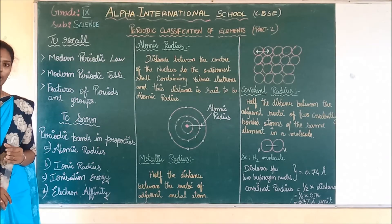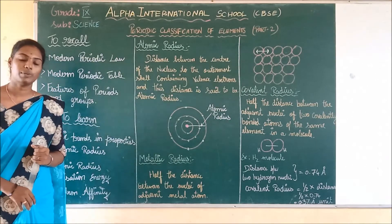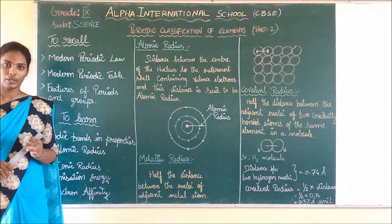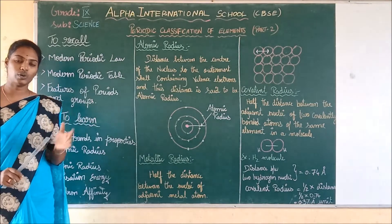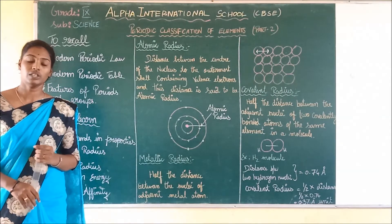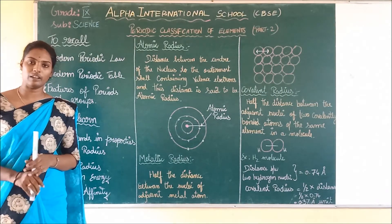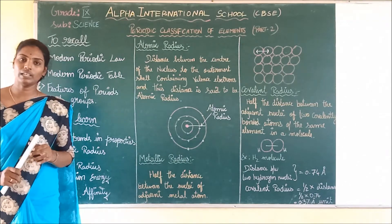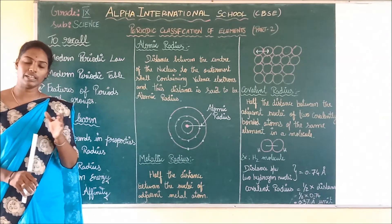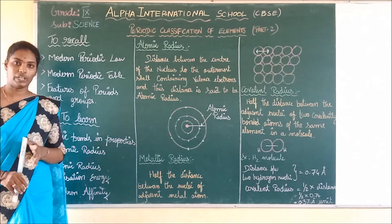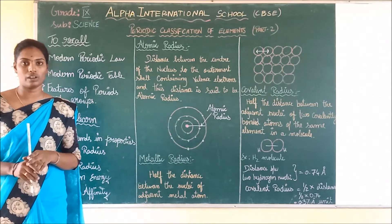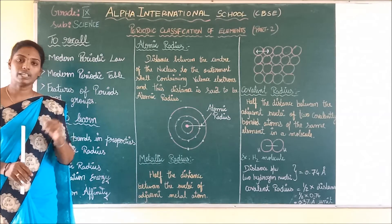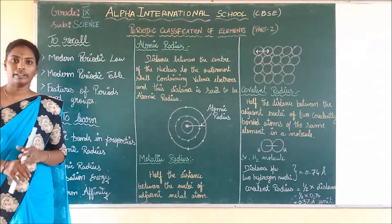What is meant by the modern periodic table? The modern periodic table is the long form of the periodic table and it has totally 118 elements. These 118 elements are arranged in horizontal rows and vertical columns. The horizontal rows are called periods and the vertical columns are called groups. So totally we have 7 periods and 18 groups.